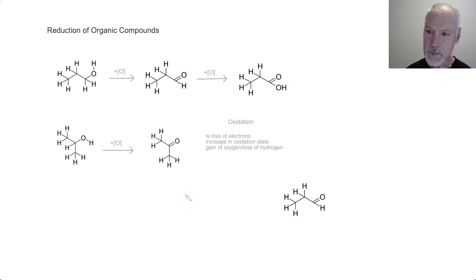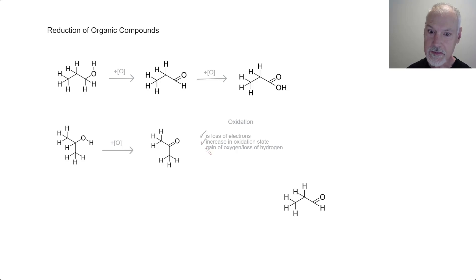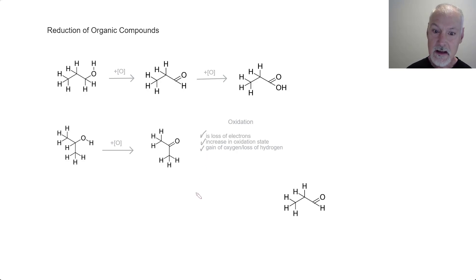We covered this in our previous program. We can recall oxidation defined several ways: it could be the loss of electrons, an increase in the oxidation state. However, sometimes in organic chemistry, it's easier just to identify oxidation as either the gain of oxygen or the loss of hydrogen.